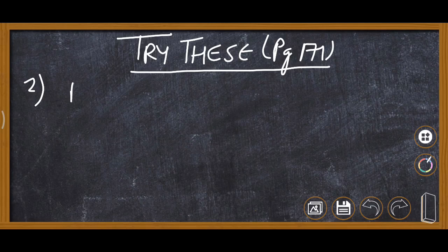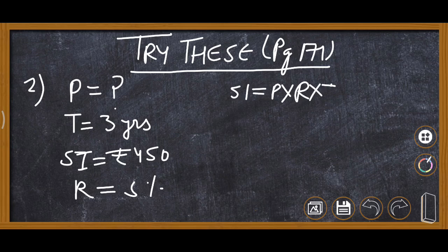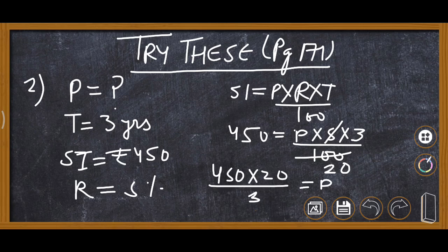We don't know the sum, so principal P = ?. Time = 3 years, SI = ₹450, rate = 5%. Using SI = (P × R × T) / 100: 450 = (P × 5 × 3) / 100. We can cancel 5 and 100 to get 20, so 450 × 20 / 3 = P. Cancelling 3, we get 150 × 20, so principal is...